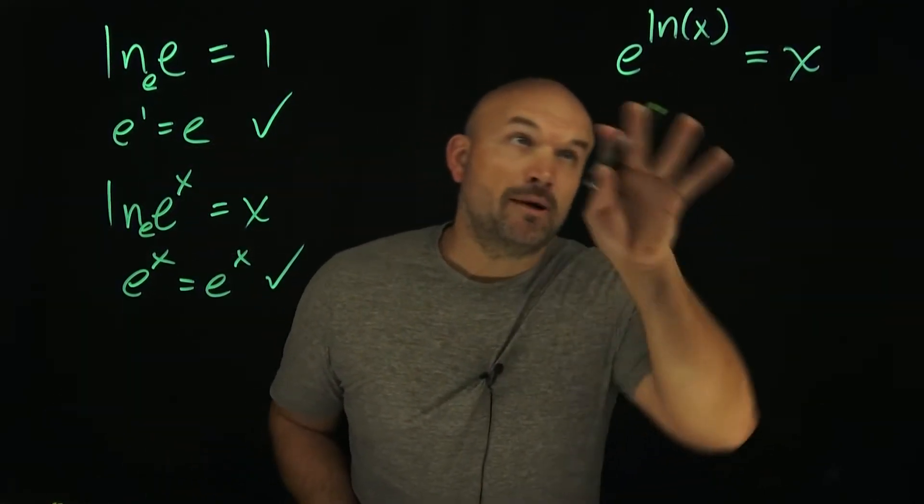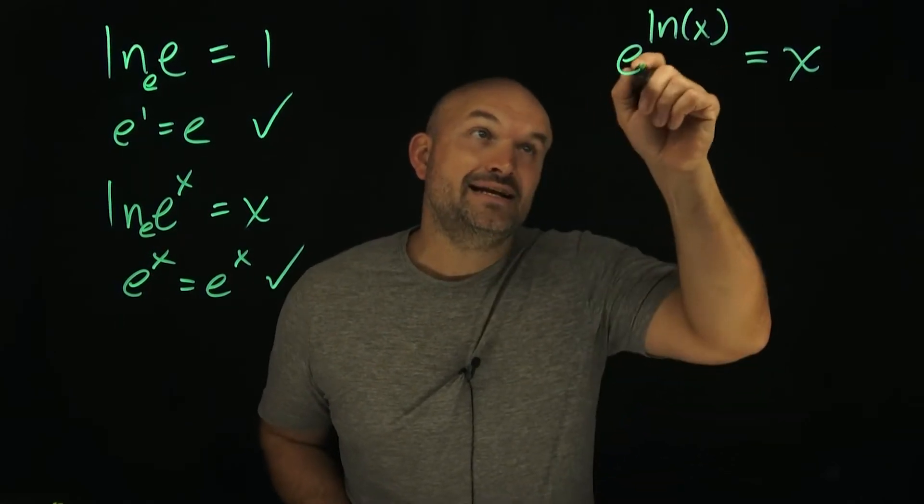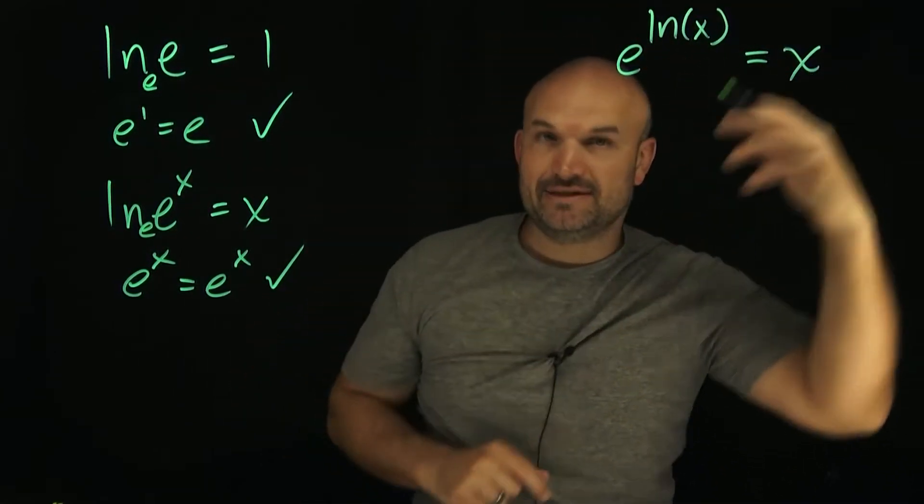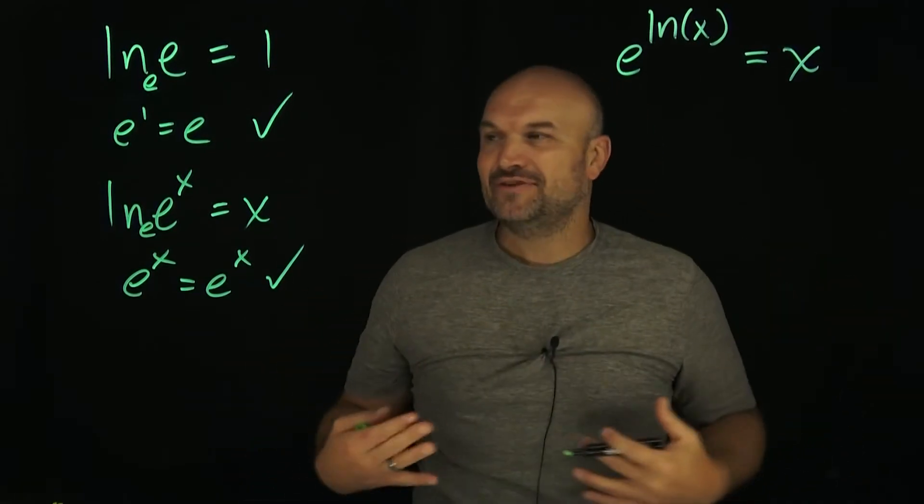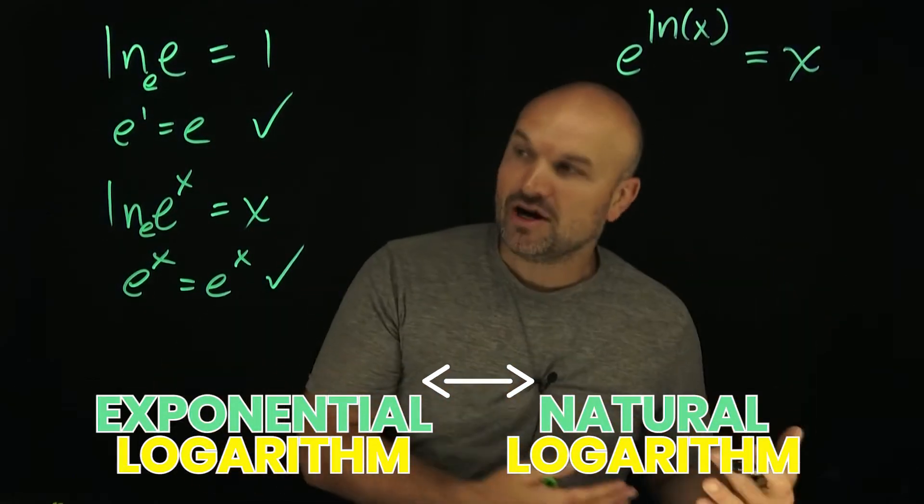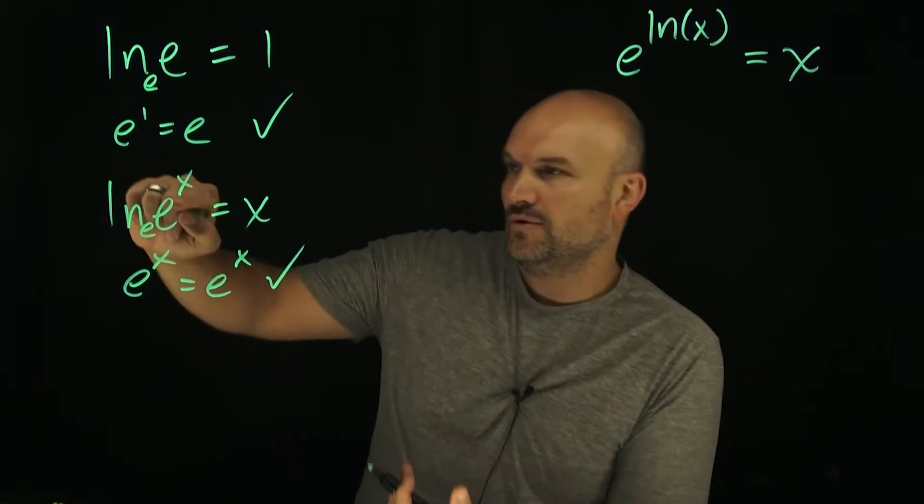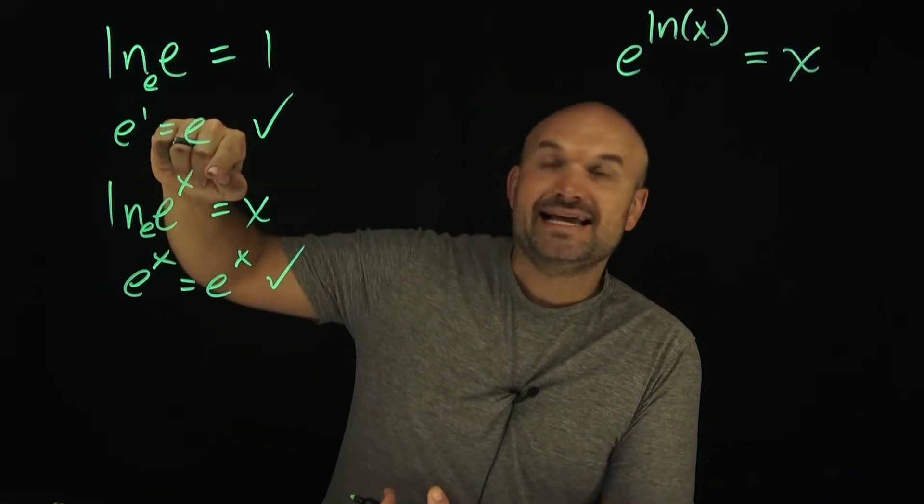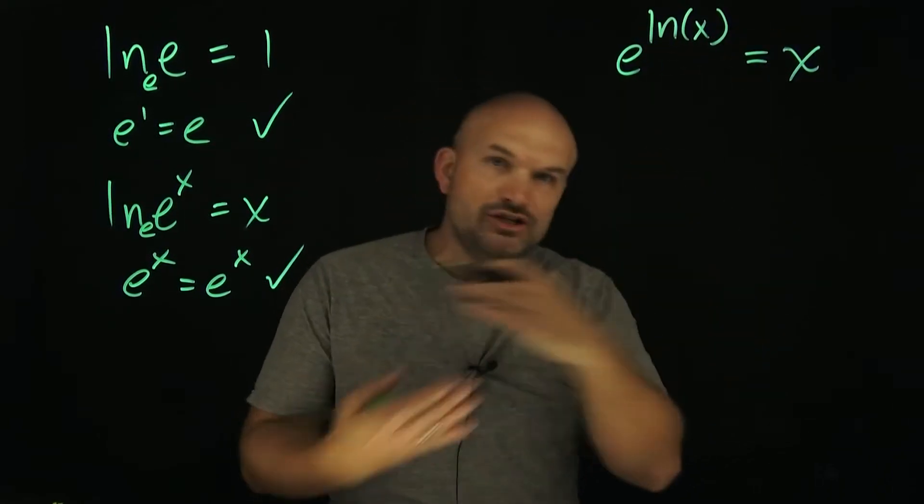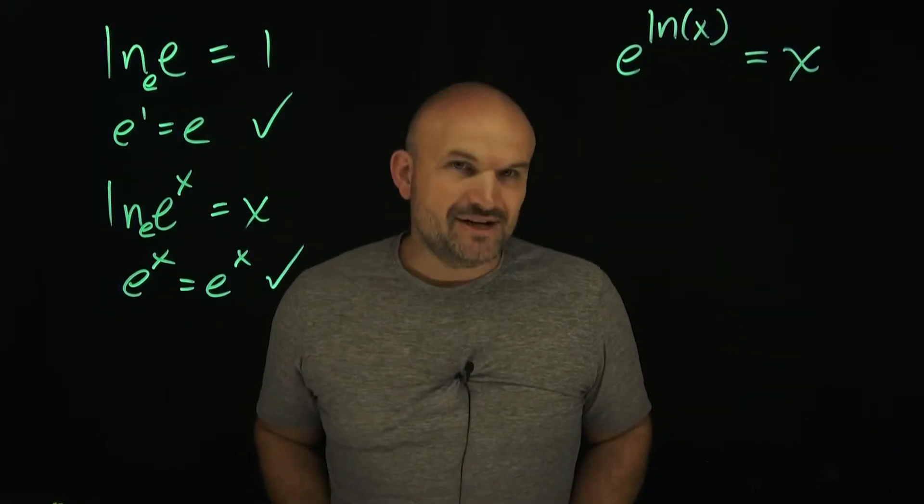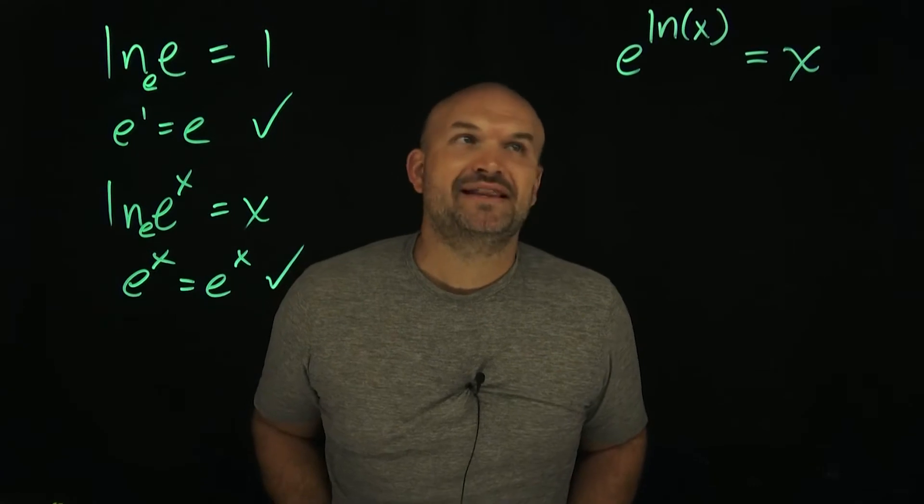But then we come to a property where it says e raised to the ln of x equals x. Now, the quick reasoning for this is that exponential and logarithms are inverse operations of each other. So if ln of e raised to the x equals x, then e raised to the ln of x equals x. They undo each other. But still, that explanation does not satisfy a lot of students.